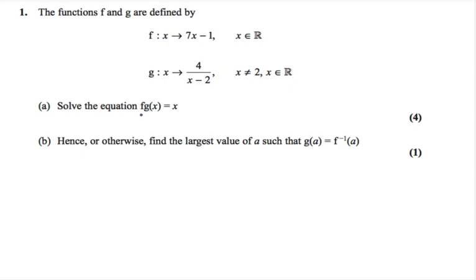Part A asks us to solve the equation f of g of x equals x. Another way to write these mappings are instead of f dot dot x you might see it as f of x equals 7x minus 1. So for whatever value of x you have you can sub it here. So f of 2 would become 7 times 2 minus 1. Similarly for g of x, so you might prefer to write these functions as g of x equals 4 over x minus 2.